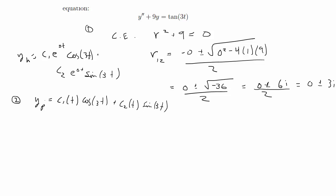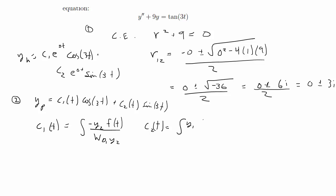The formulas for variation of parameters are: c1(t) is the integral of negative y2·f(t) over the Wronskian of y1 and y2, and c2(t) is the integral of y1·f(t) over the Wronskian of y1 and y2. Here y1 is cos(3t) and y2 is sin(3t).